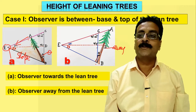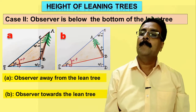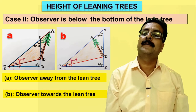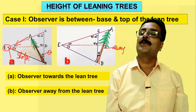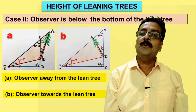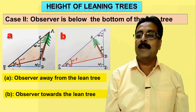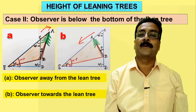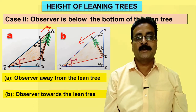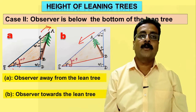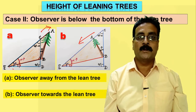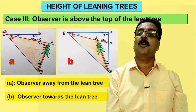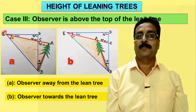Case 2 is when the observer is below the bottom of the tree — the observer is on the lower side and the tree is on the uphill. Again, two sub-cases apply: tree leaning away from the observer and tree leaning toward the observer. Case 3 is when the observer is above the top of the leaning tree — the tree is entirely below the observer. In this case also, the tree may lean away from or toward the observer.